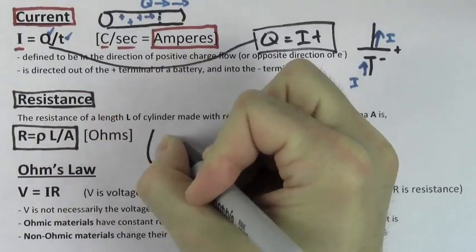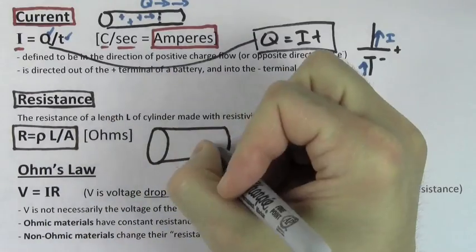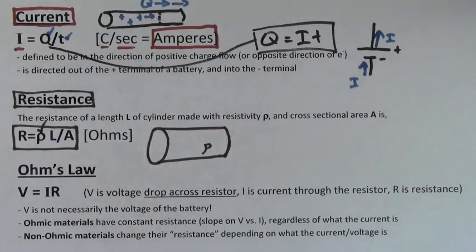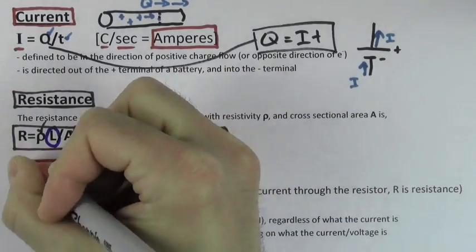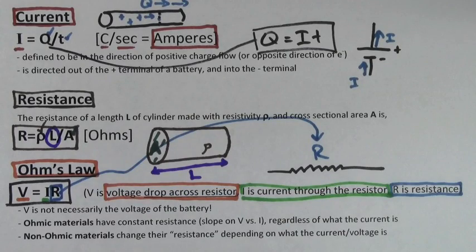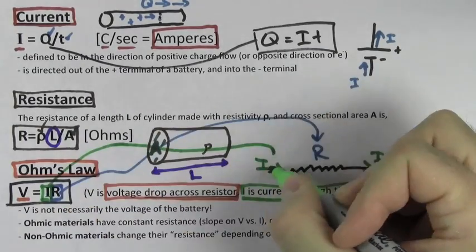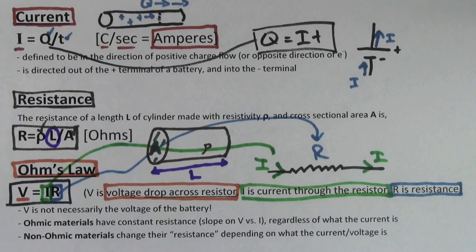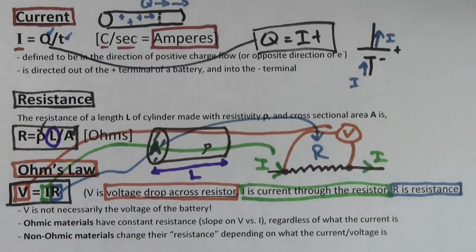You can find the resistance of a cylindrical resistor using the formula rho L over A. Rho is the resistivity of the material, A is the cross-sectional area, and L is the length of the resistor. When you use Ohm's law, R is the resistance of the resistor, I is the current that flows through that particular resistor, and V is the voltage drop across that particular resistor.